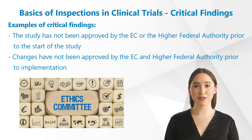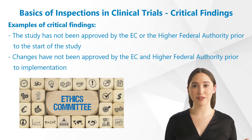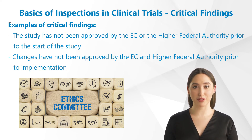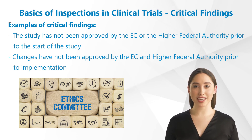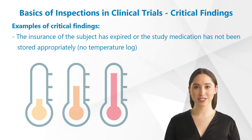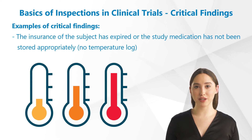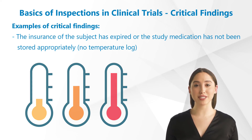Some more examples of critical findings are the following: the study has not been approved by the EC or the higher federal authority prior to the start of the study; changes have not been approved by the EC and higher federal authority prior to implementation because the rights of subjects would be affected in a negative way; the insurance of the subject has expired; or the study medication has not been stored appropriately, for example if no temperature log has been kept or if other subjects have access.